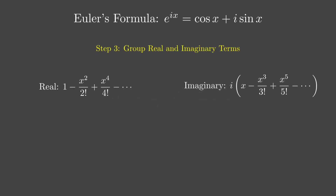Let's organize and group the terms. The real parts — those without i — are 1 minus x squared over 2 plus x to the 4th over 4 minus dots. The imaginary parts — those with i — are i times (x minus x cubed over 3 plus x to the 5th over 5 minus dots). This is starting to look familiar, right? Let's see what these series remind us of.